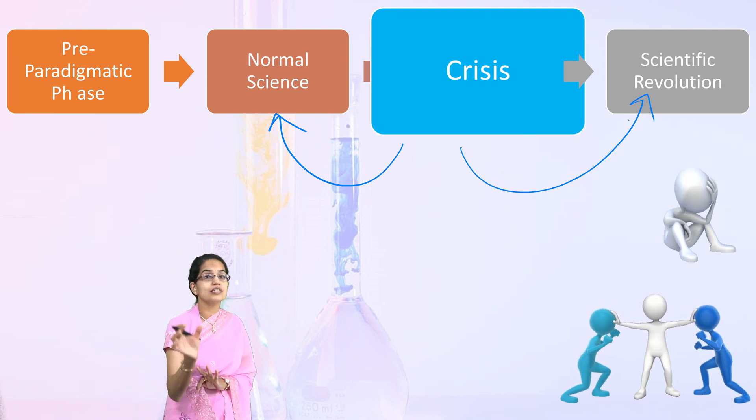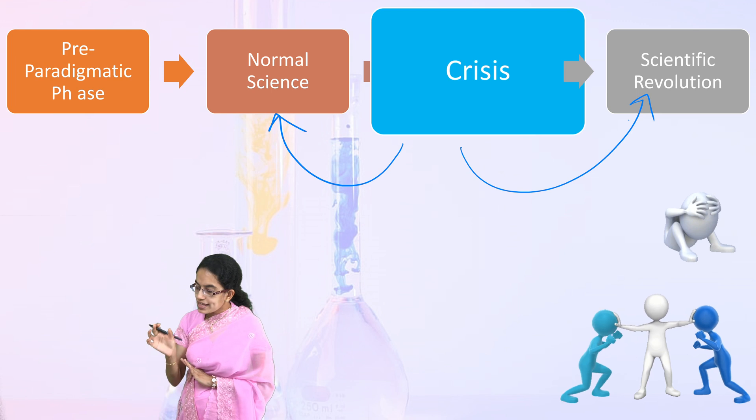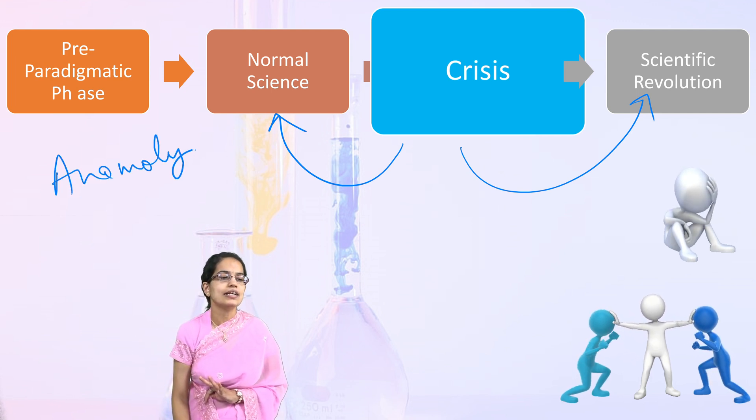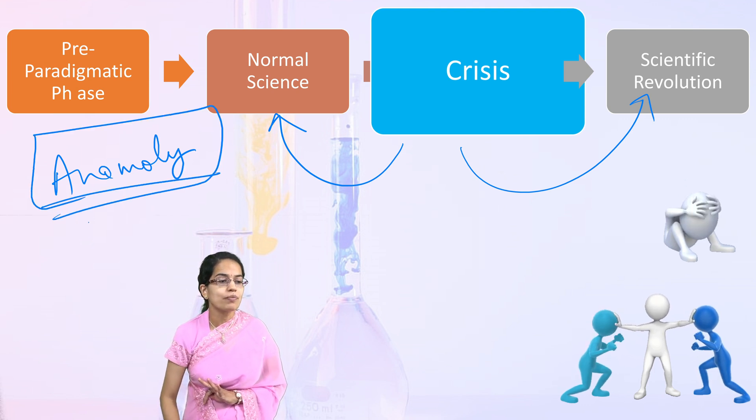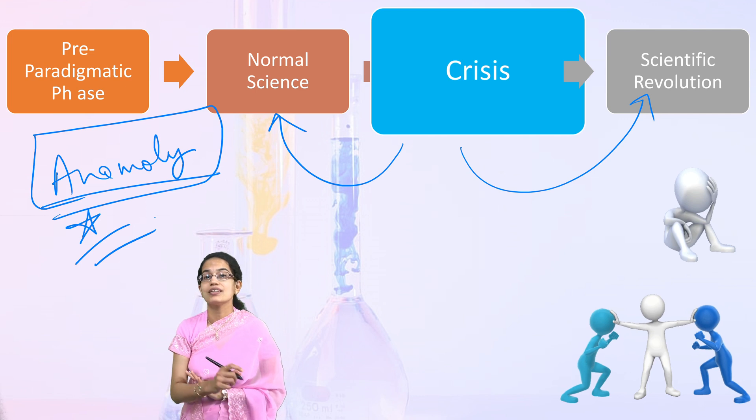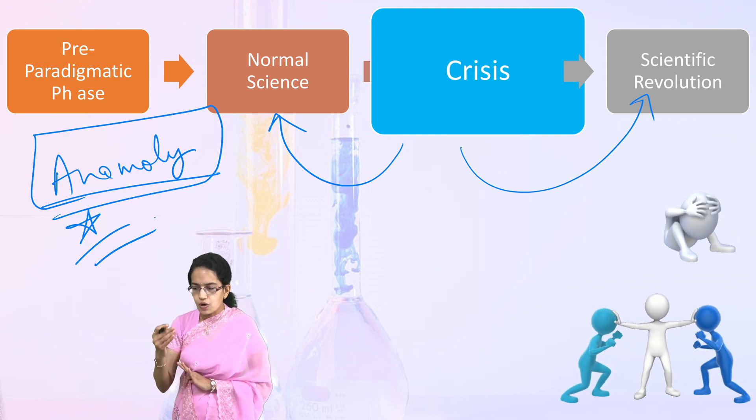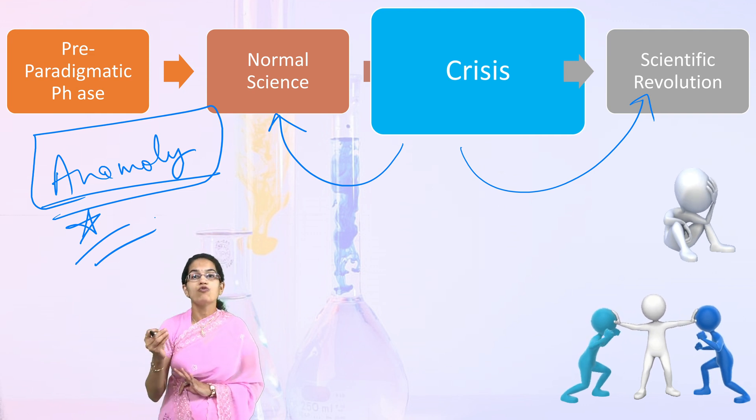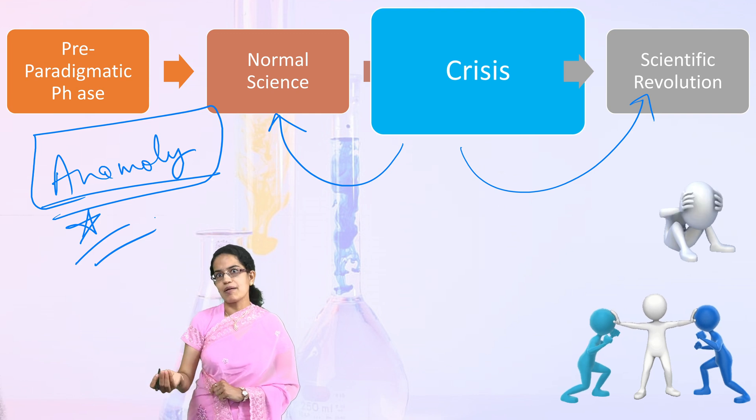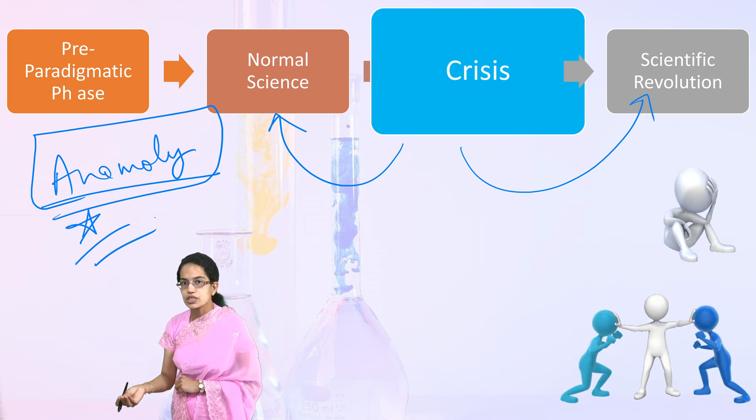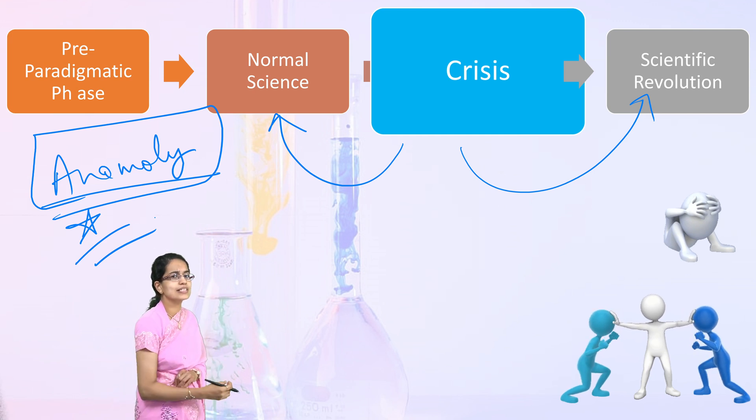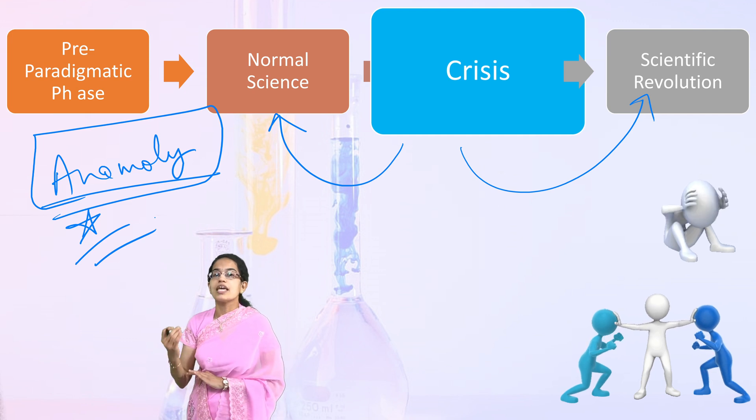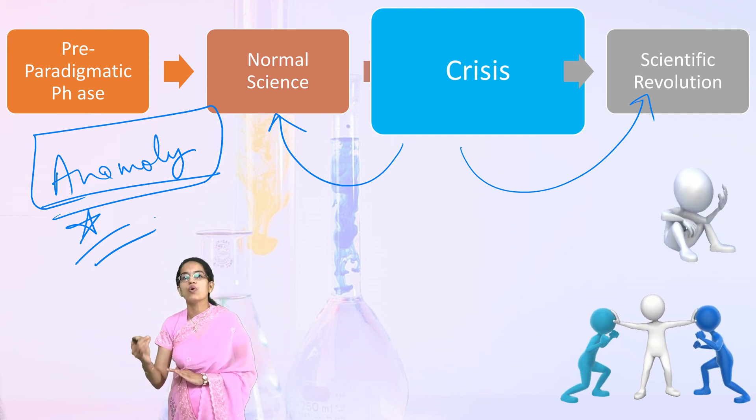This crisis phase is very important and this generates because there is anomaly that comes in and this anomaly therefore becomes very important feature under Kuhn's paradigm. According to him, these anomalies give you a path for creating new thoughts and probably new discoveries and new inventions. If this anomaly did not exist, people would not question the previous existing laws. They would follow what have been given so far blindly.